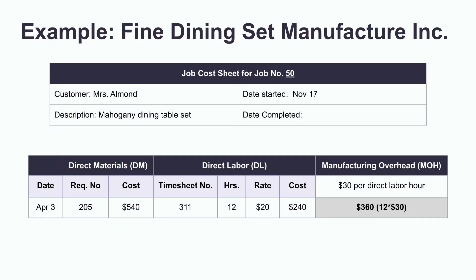Let's look at an example. Fine dining set manufacturer Zinc is in the business of manufacturing fine dining table sets. Mrs. Arland wants to buy a unique and custom-made mahogany dining table set. The figures illustrated in the graphics state the cost of the direct material, direct labor, and manufacturing overhead.